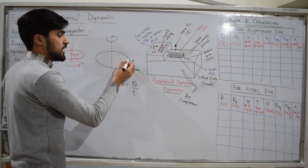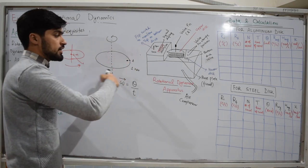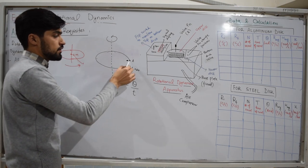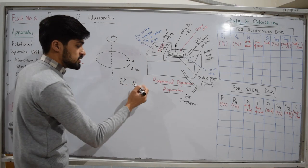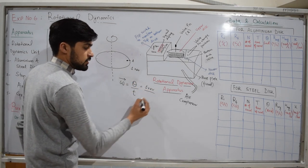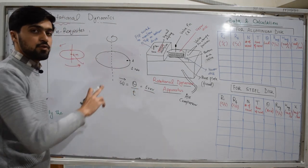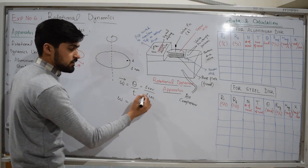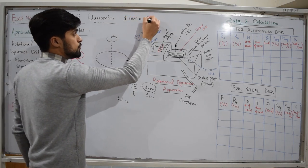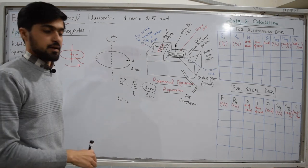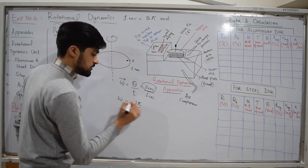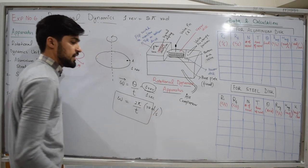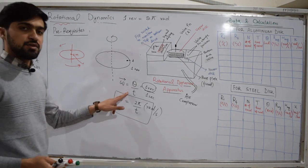Angular velocity is a vector quantity, omega. Omega is equal to theta divided by t, where theta is the angular displacement. If the disk moves from A and comes back to A, the angular displacement for one revolution equals 2π radians. If it takes one second to complete one revolution, the angular velocity equals 2π radians per second. So omega = theta/t, with units of radians per second.